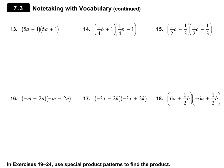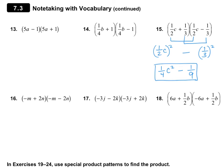Let's look at these problems. For number 15, I multiply one-half c and square it, and one-third is also squared with a minus sign in between. One-half times one-half is one-fourth, so this is one-fourth c squared minus one-ninth. That's my answer for number 15. For number 17, we have negative 3j squared minus 2k squared: negative 3j squared gives positive 9j squared, and 2k squared gives 4k squared. So the answer is 9j squared minus 4k squared.